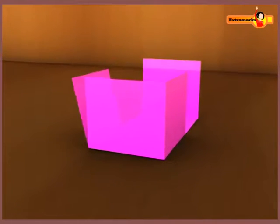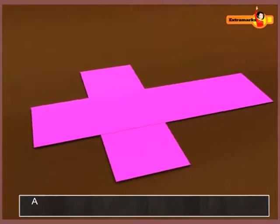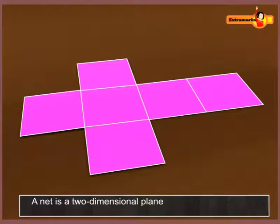It is often helpful to draw a net to find the surface area of a solid. A net is a two-dimensional plane which can be folded to construct the solid.